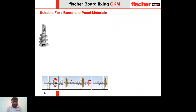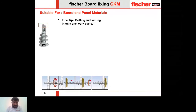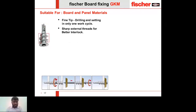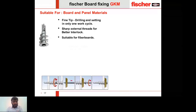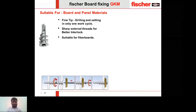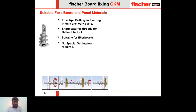The fifth anchor is Fischer Board Fixing GKM — suitable for board and panel materials, with most features the same as GK. The key difference is that GKM comes with a sharp, fine tip allowing it to drill directly into the cavity or board material without any special setting tool — just a normal drill machine or screwdriver. It also has sharp external threads for better interlock, and importantly, the GKM is a metal version (unlike the nylon GK), making it suitable for fiber boards as the sharp threads can cut through fibers.